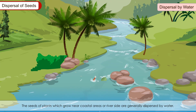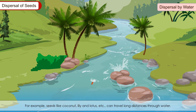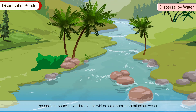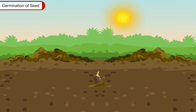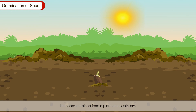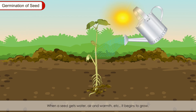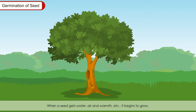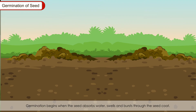Dispersal by water: Seeds of plants growing near coastal areas or riversides are generally dispersed by water. Seeds like coconut, lily and lotus can travel long distances through water. Coconut seeds have a fibrous husk to keep them afloat, and a large air cavity inside to help them float. Germination of seed: Seeds obtained from a large plant are usually dry. In this dry, dormant state, seeds can remain alive but inactive for long periods. When a seed gets water, air and warmth, it begins to grow. The process of growing a tiny plant from a seed on the availability of optimum temperature, right quantity of water and air is called seed germination.